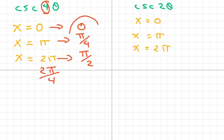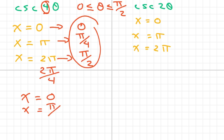This is going to be 2 pi over 4. All of those fit in between 0 and pi over 2, or 0 and 90 degrees. So those are all my answers. x equals 0, x equals pi over 4, and x equals pi over 2.